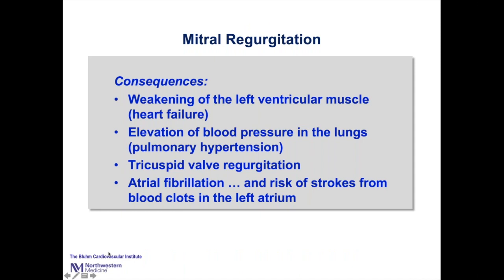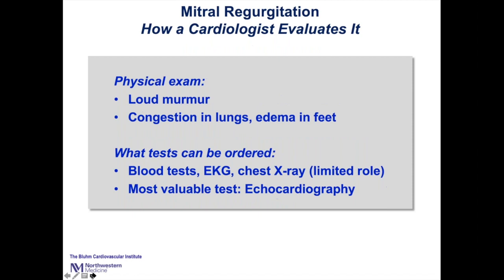Mitral regurgitation causes weakening of the left ventricular muscle because of the extra blood flow — it's like a balloon that gets too much water in it. It stretches out, and if you fix it too late, it may not completely return to normal. It causes elevated blood pressure in the lungs, known as pulmonary hypertension, which can then affect the tricuspid valve. Atrial fibrillation and risk of stroke from blood clots in the left atrial appendage can also occur.